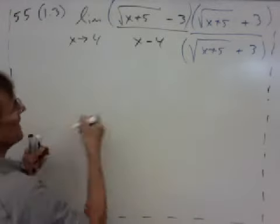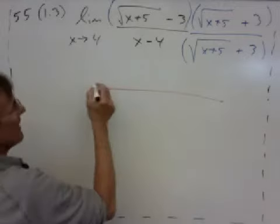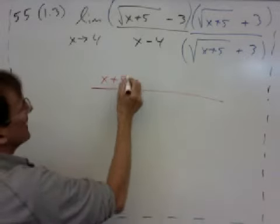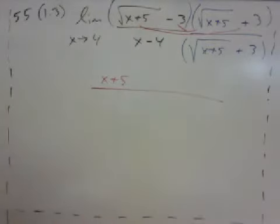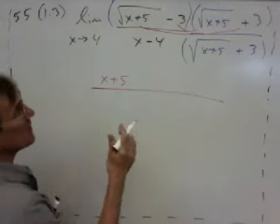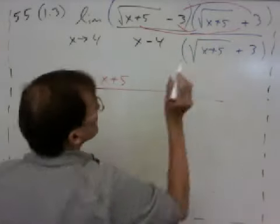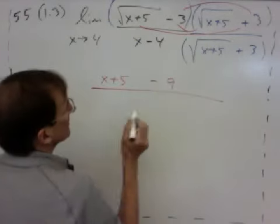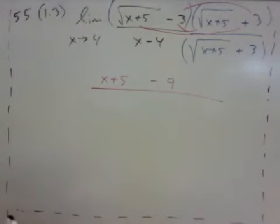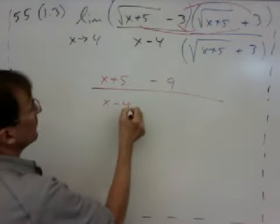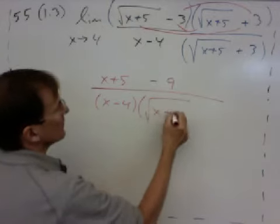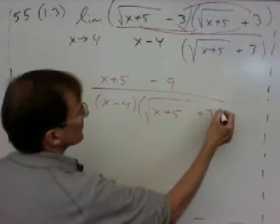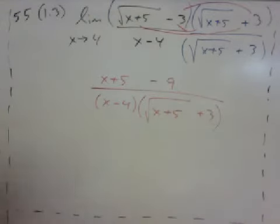And now I'm going to go kind of quickly here. So when I do this multiplication, I end up with the radicals cancel, so I just get x plus 5. The middle terms, because the conjugates, are going to cancel. So I'm just going to get nothing in the middle. And then my last term is going to be negative 9. So the numerator is x plus 5 minus 9. The denominator is going to be x minus 4. And I'm going to leave this in radical form here.